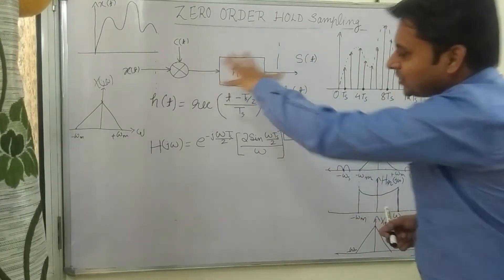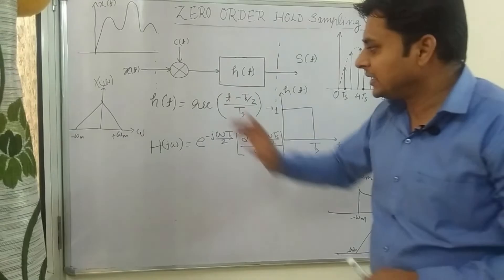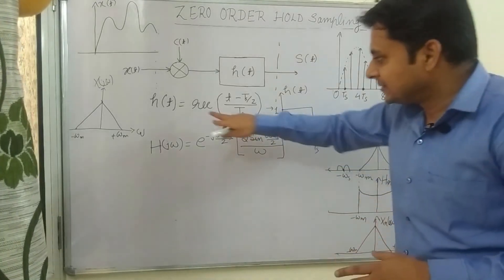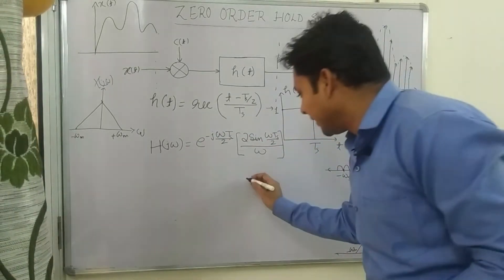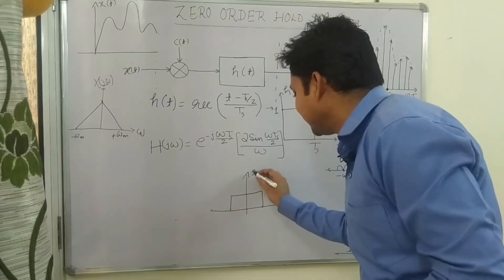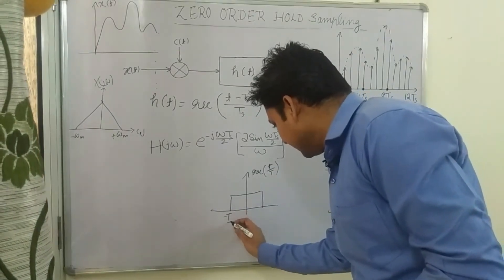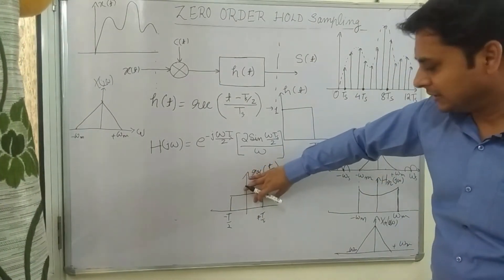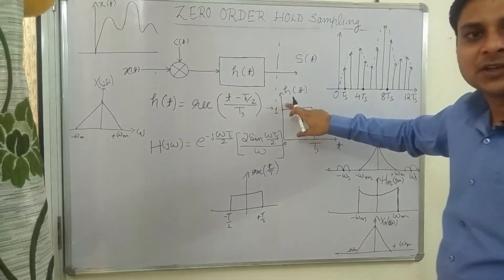This sampled function is then passed through a system with impulse response H(t), which is a rectangular function delayed by T_s/2 to the right. It is written as rect((t − T_s/2) / T_s). The standard rectangular function goes from −T/2 to +T/2; here we shift it by T_s/2 so it spans from 0 to T_s with amplitude 1.